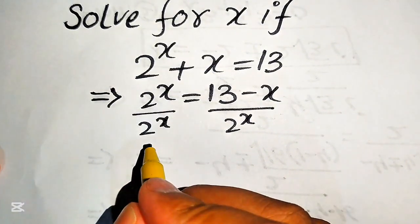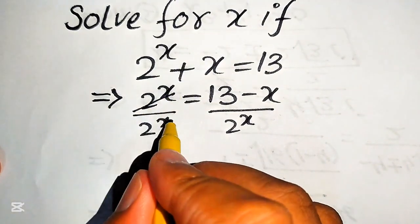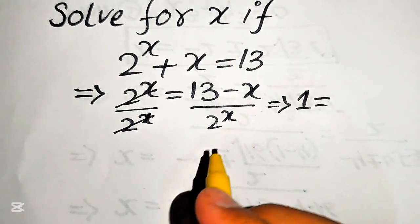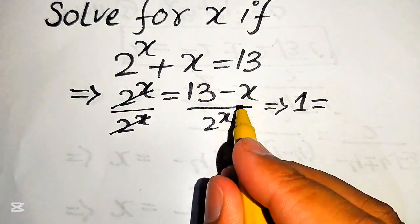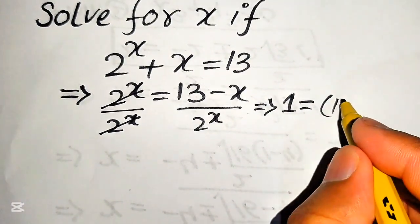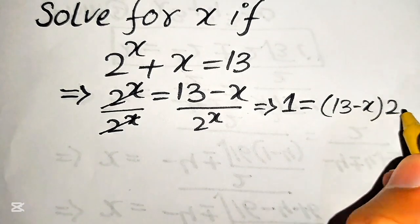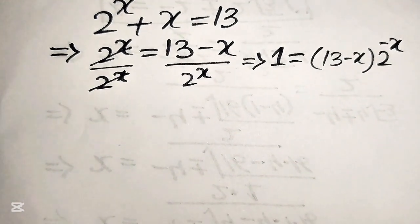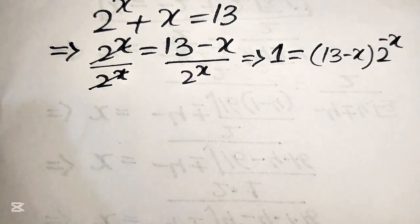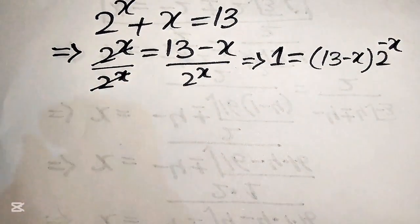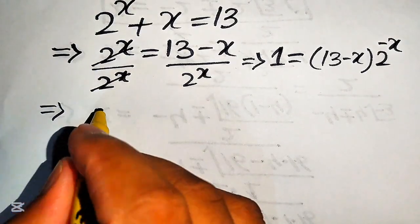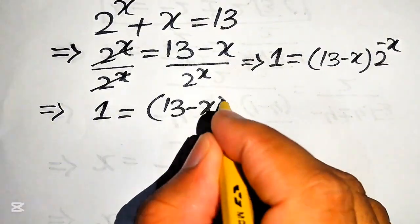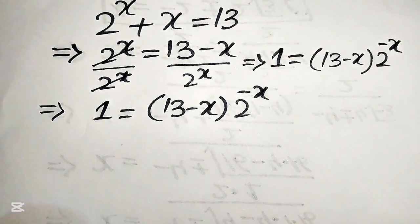We divide 2 to the power of x on both sides. This term is cancelled out by this term, and we get 1 equals 13 minus x into 2 to the power of minus x. Further simplification gives us 1 equals 13 minus x into 2 to the power of minus x.